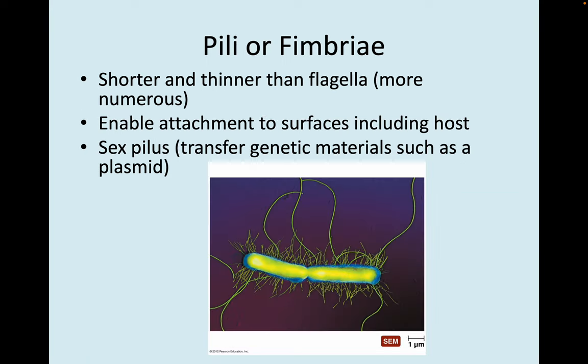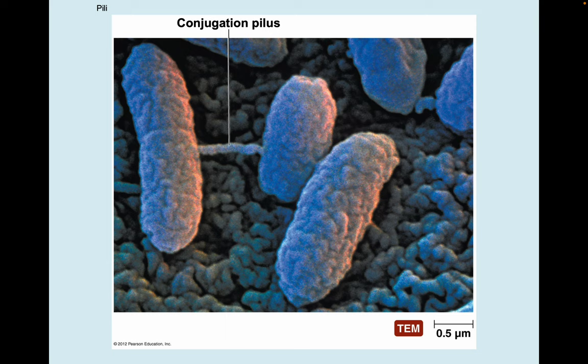Pili or fimbriae are other extracellular structures — shorter and thinner than flagella but usually more numerous. They enable attachment to surfaces, including a host. Some are sex pili — tubes able to transfer genetic material like plasmids from one cell to another. In this transmission electron micrograph, you can see a conjugation pilus or sex pilus going from one cell to the other, transferring plasmids.